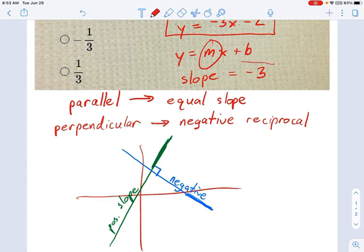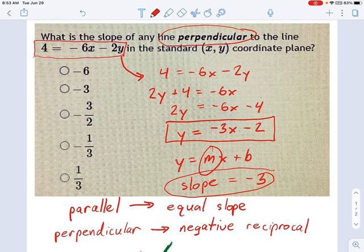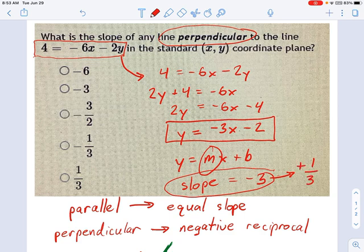So slope of negative three. What's the negative reciprocal of negative three? Well, we flip it upside down, we turn it into one-third, and we take away the negative sign and turn it into a positive sign. So the perpendicular line is going to have a slope of one-third, not negative three. It's the perpendicular line because it's a negative reciprocal.